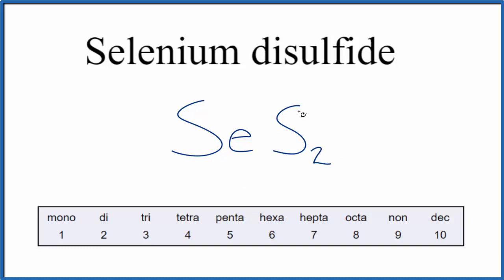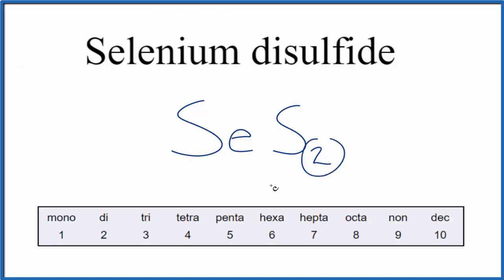If you were given this formula and asked to write the name, you'd have two nonmetals. You'd write selenium for the element symbol Se, and because there's just one and it's the first element, we don't write anything in front — we just leave it as selenium. Then, two of the sulfur atoms gives us disulfide.